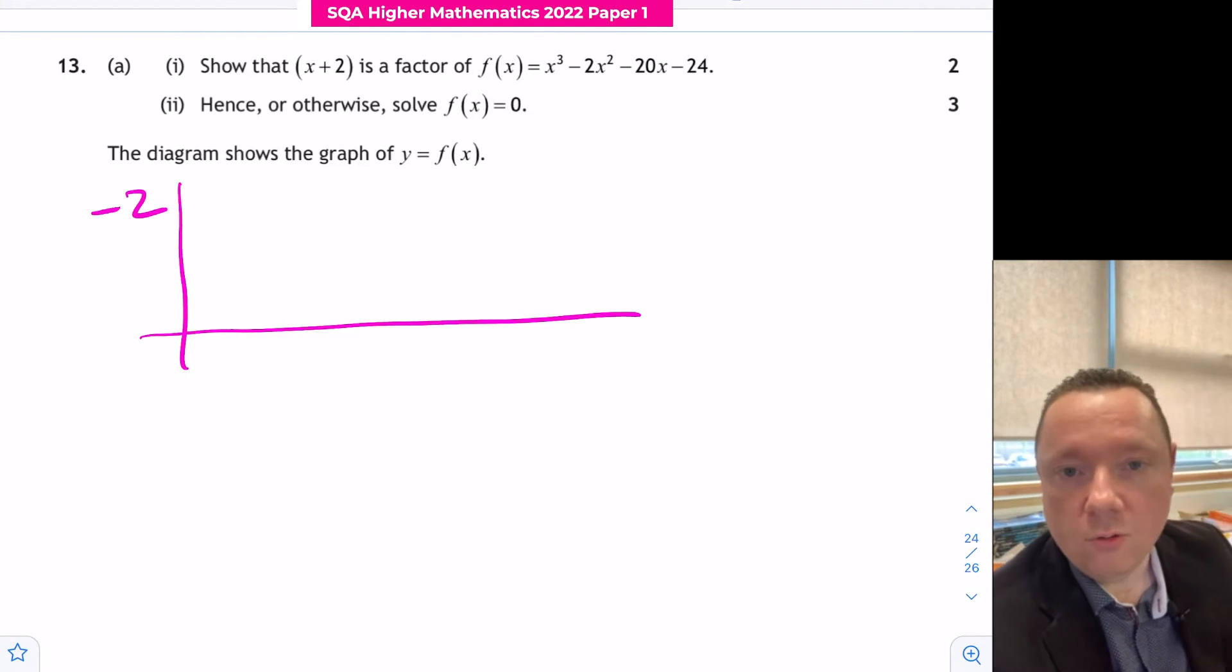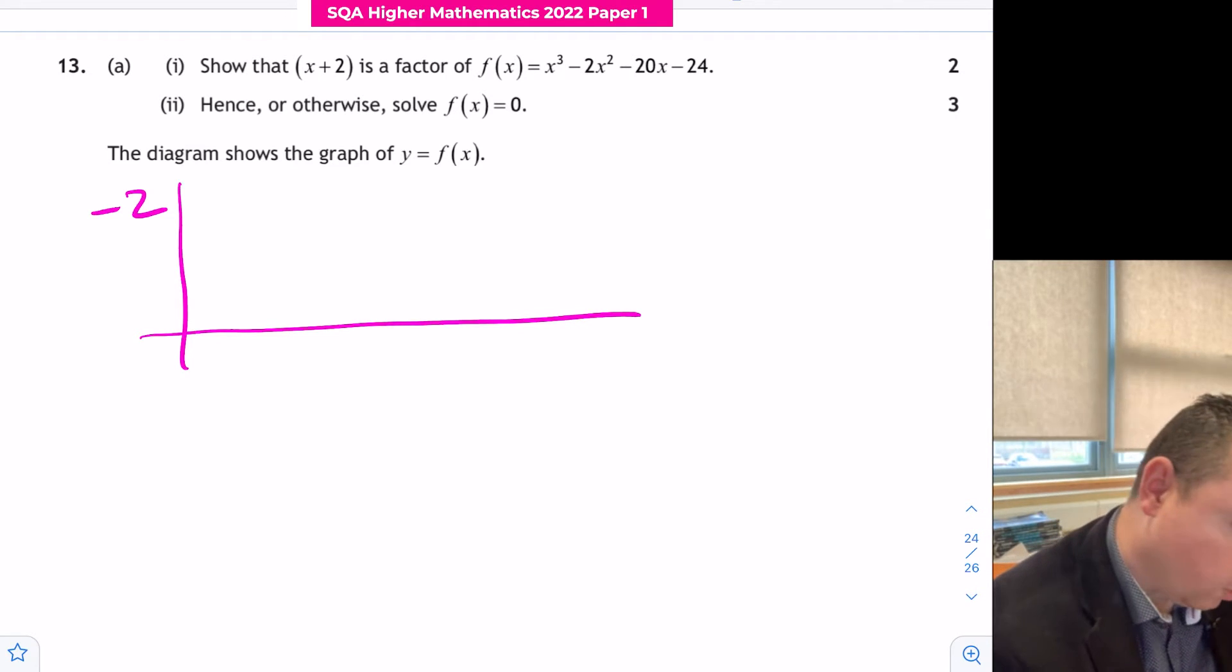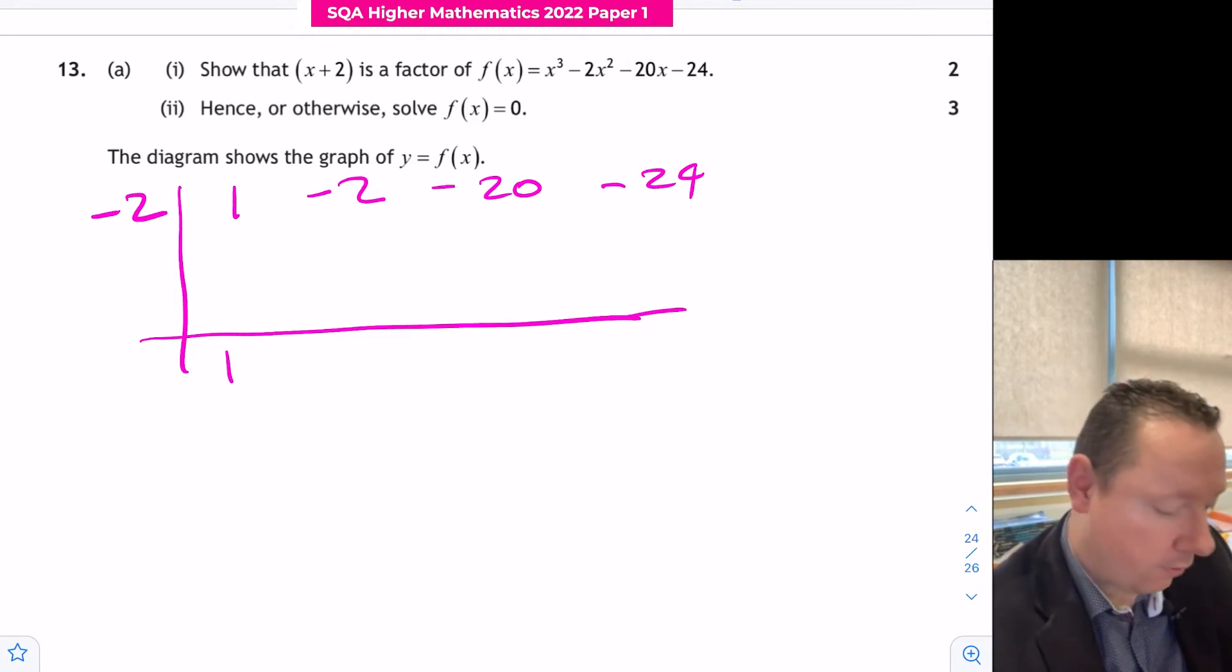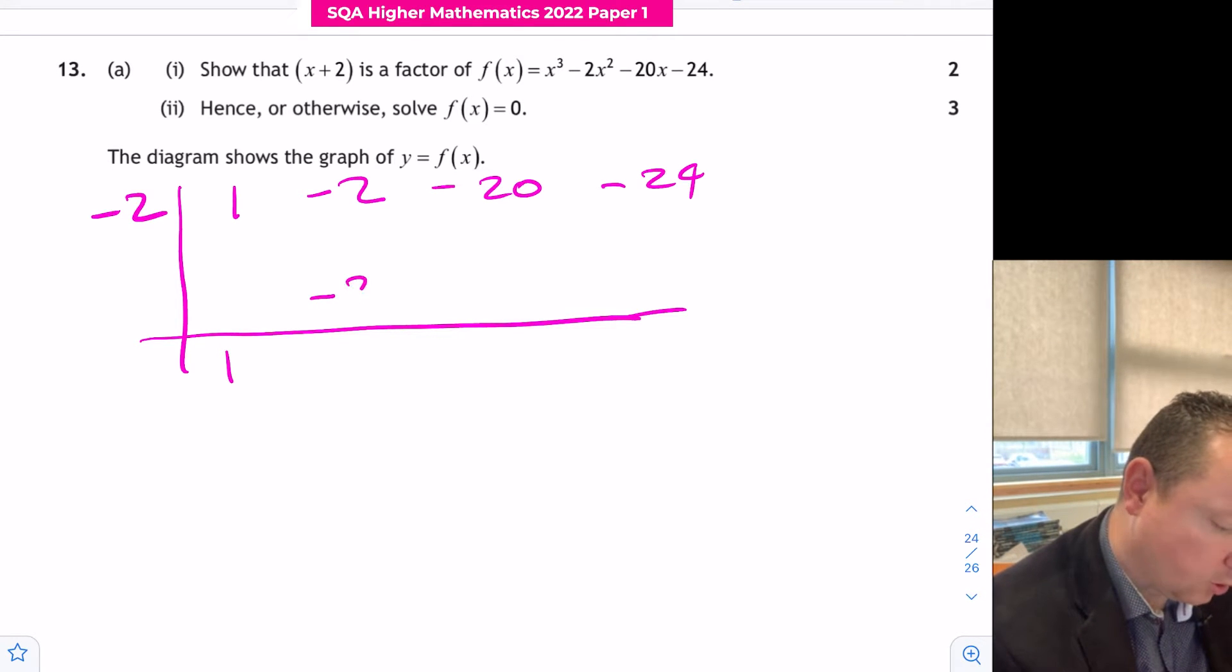And then the coefficients of our function: 1x cubed minus 2x squared minus 20x minus 24. One just drops straight down, then we've got 1 times minus 2 which is minus 2, adding them together to get minus 4.